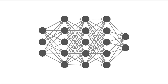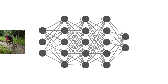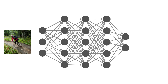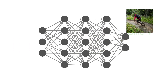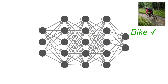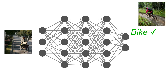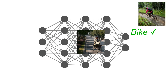Understanding how neural networks produce predictions remains a fundamental challenge. Consider this image classification model that takes an image's input and produces labels as output. In this example, the mountain bike image moves through the network and is correctly classified. However, in the following example, this bicycle is incorrectly classified as a truck.